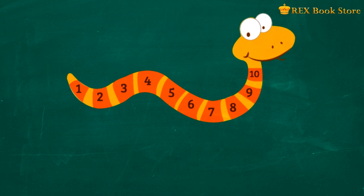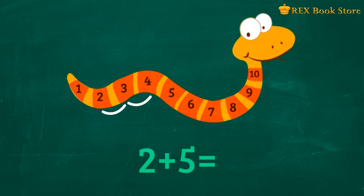What is two plus five? Remember to start counting from the number two. One, two, three, four, five. We're at number seven. So two plus five is equal to seven.